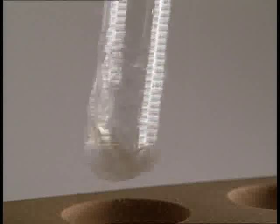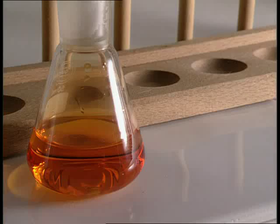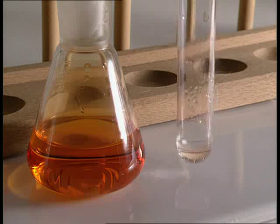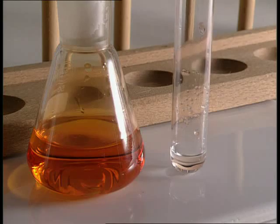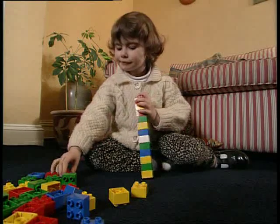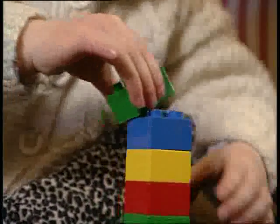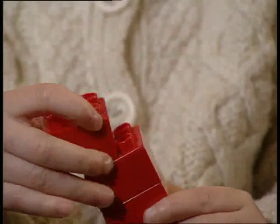Molecules containing double bonds are the basic building blocks for a group of plastics known as polymers. Each building block is called a monomer. Thousands join together to form long chains called polymers. One of the most common polymers in use today is polystyrene.